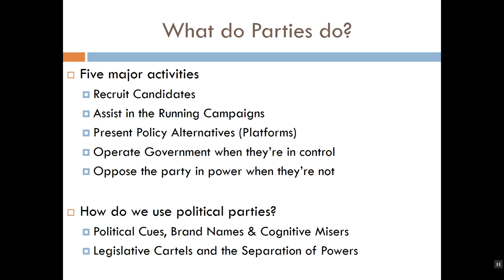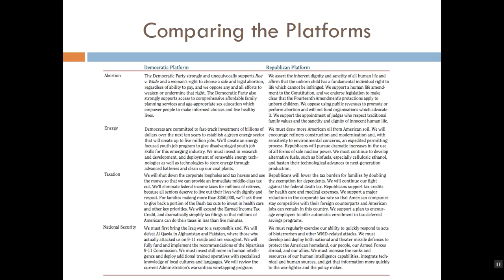The third major function is to present voters with policy alternatives by publishing platforms. Platforms are technically written by people in the party organization category but must be approved and can be amended by votes of the party in the electorate. A platform is basically just a list of issue positions — I've taken excerpts from both the Democratic and Republican Party platforms comparing their positions on abortion, energy, taxation, and national security.